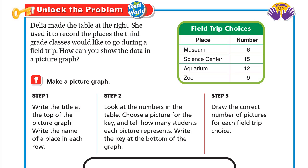Let's unlock the problem. Delia made the table at the right. She used it to record the places the third grade classes would like to go during a field trip. How can you show the data in a picture graph? We have this table with numbers, and we will make another table which has pictures or symbols instead of numbers.